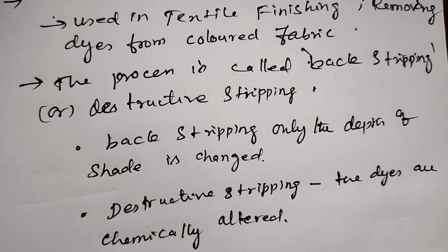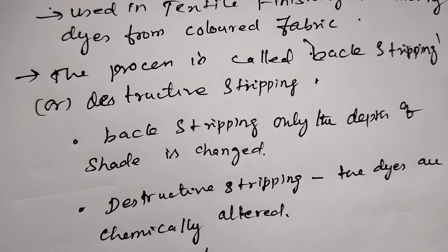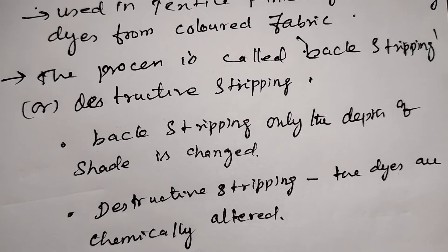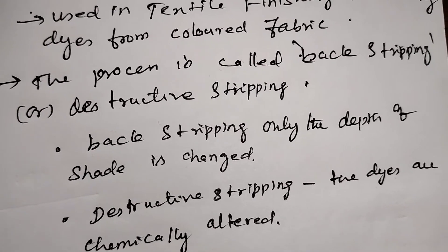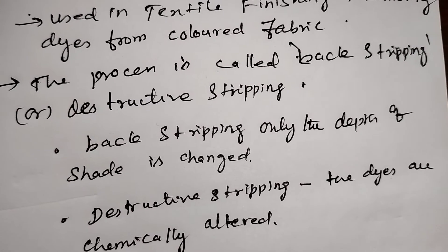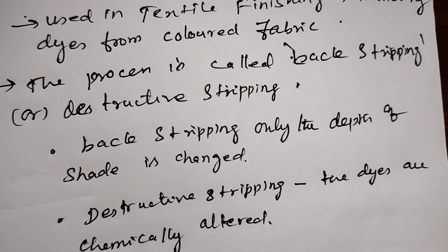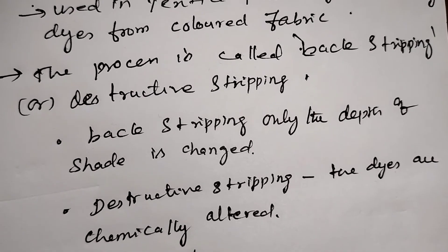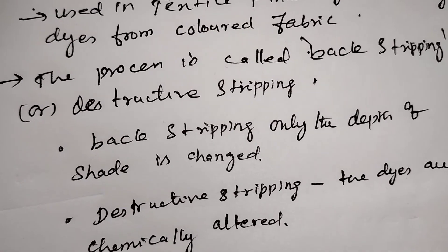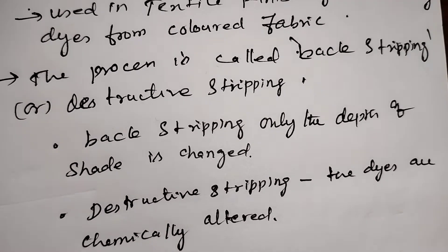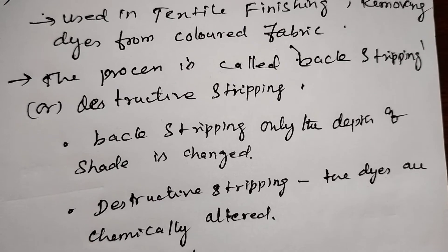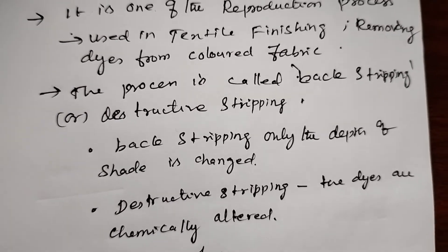Suppose if you have a pink color, and that's mixed with yellow color. Then the pink color is customized and the chemical is altered. So the yellow becomes orange because the colors are mixed. That is destructive stripping. Back stripping is the depth of shade — the color is changed.